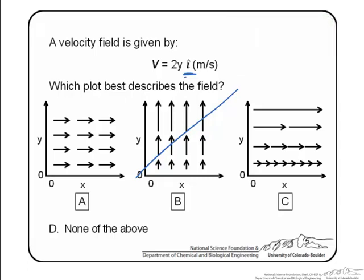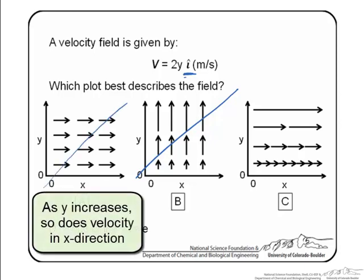So what we are told here is that as y changes our velocity component is also going to change. So it is not going to stay constant with y. So we could get rid of the first choice.